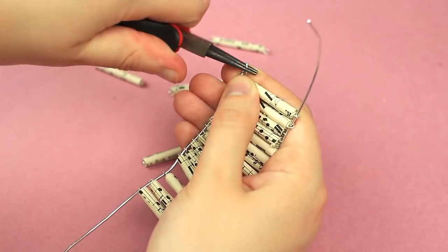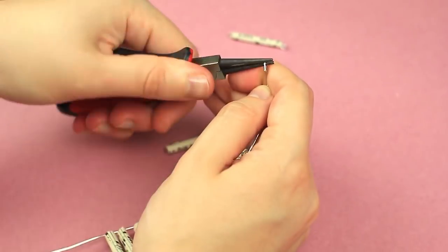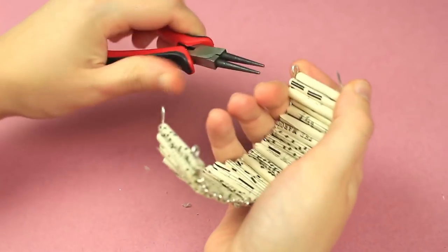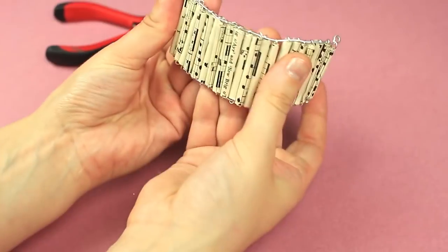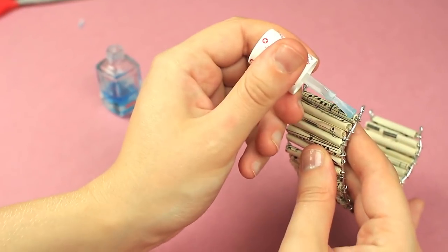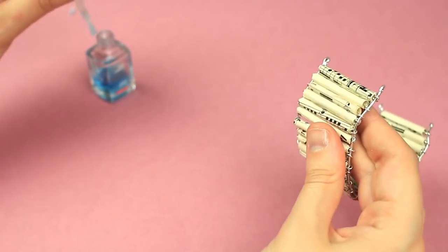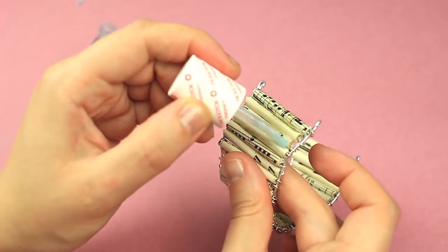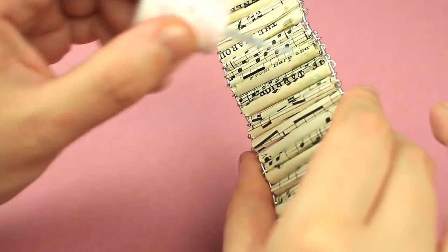Make wire loops on one side of the bracelet. Shift the beads and make the same loops on the other side. Cover the tubes with nail polish to keep them safe for a long time. Repeat for the other side.